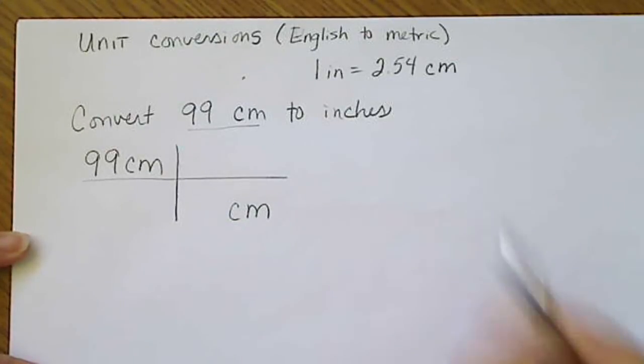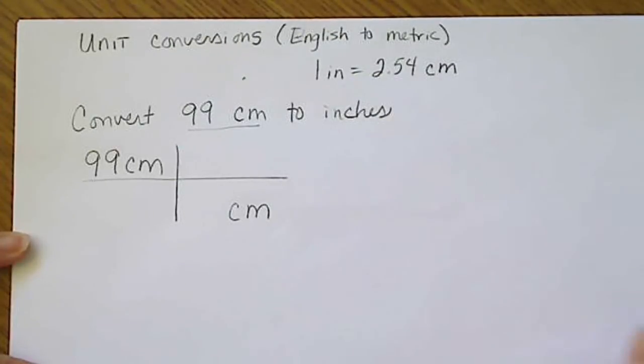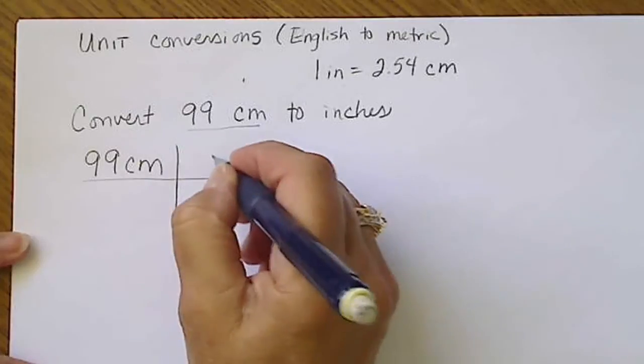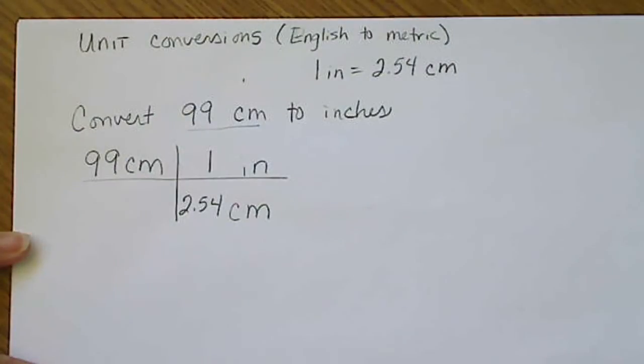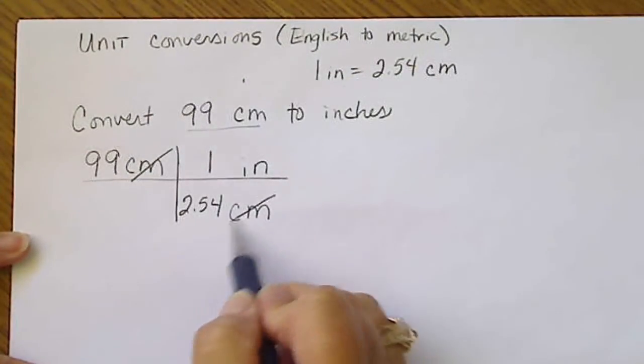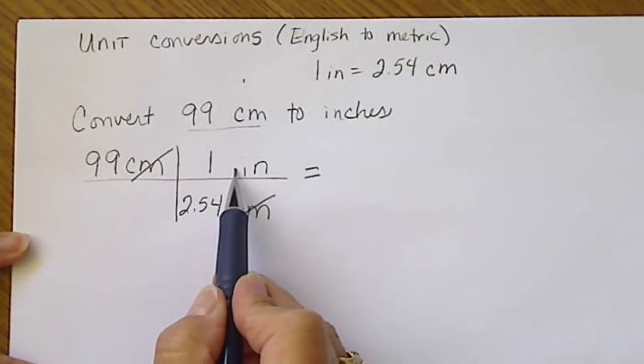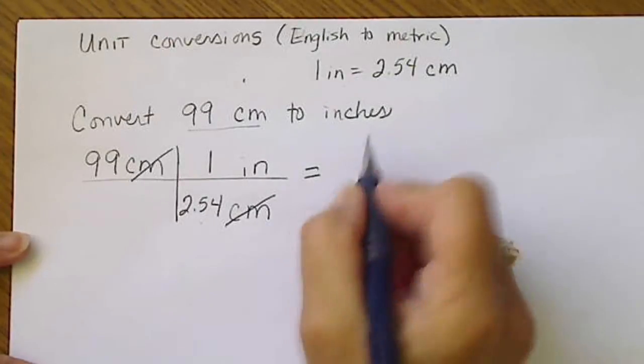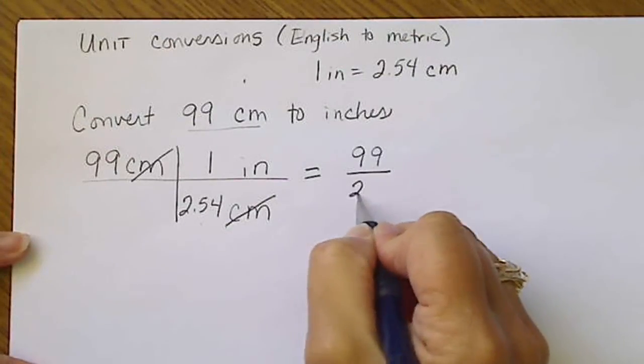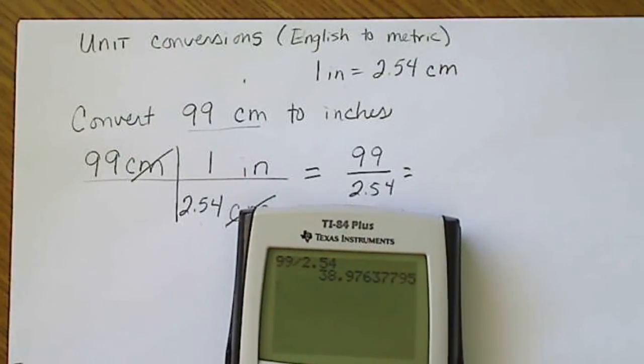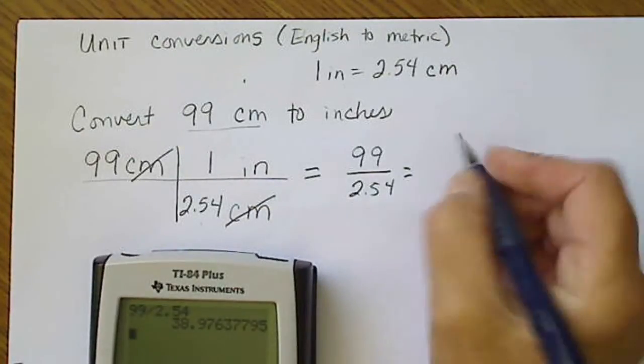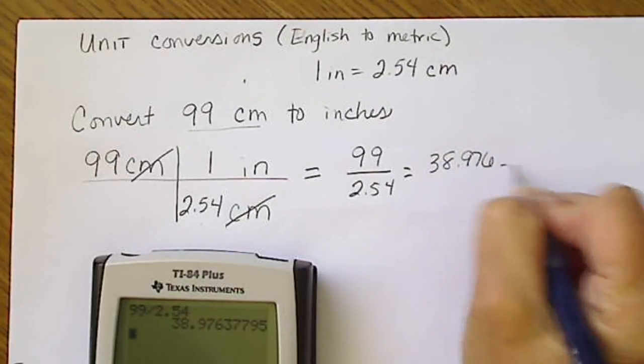Then we are going to multiply this by a conversion. I draw this little train track looking thing so that I clearly see that the centimeter would go down here in the denominator. Since we can go from centimeters to inches in one step, I just go ahead and put the word inch here. The one goes with the inch, the 2.54 goes with the centimeter, and the word centimeter cancels. Now this turns into 99 times 1 divided by 2.54, or simply 99 divided by 2.54. You plug that in the calculator and we get 38.97 and so on.